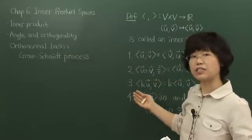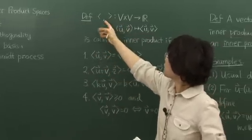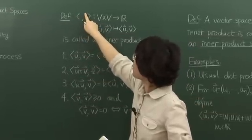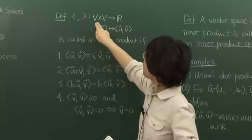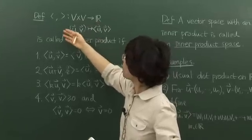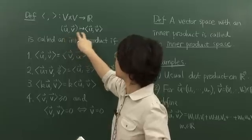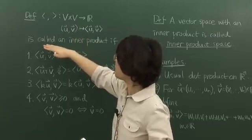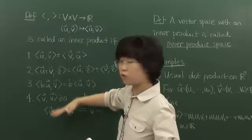Now let's define inner product first. Inner product, here we denote it as angle brackets from V cross V to R, is a rule that assigns to each pair of vectors a real number. So this is called inner product if it satisfies the following four axioms.